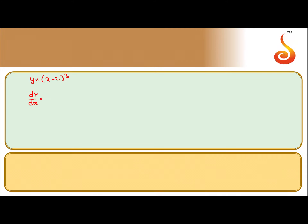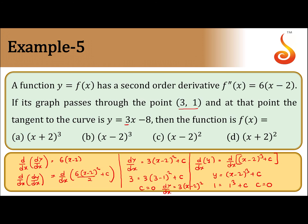To verify: differentiating y = (x-2)³ gives dy/dx = 3(x-2)². Differentiating again gives d²y/dx² = 6(x-2), which is exactly what was given. So f''(x) = 6(x-2) checks out — option B is correct.